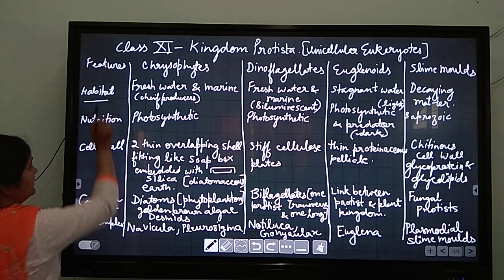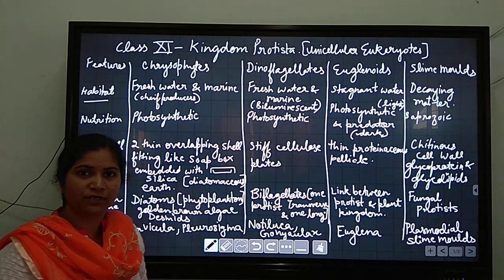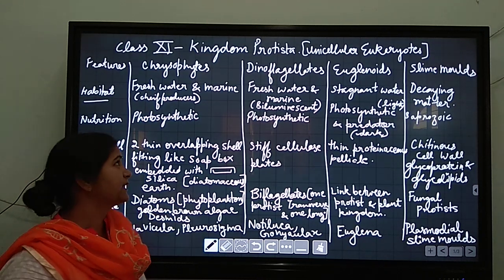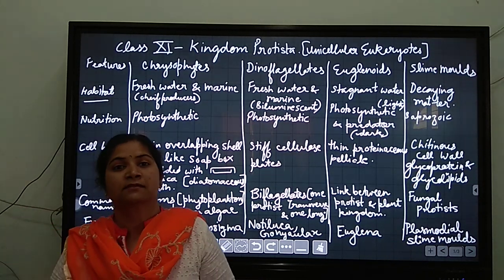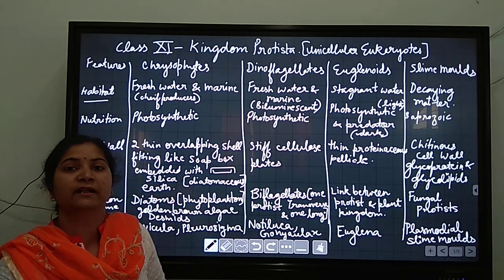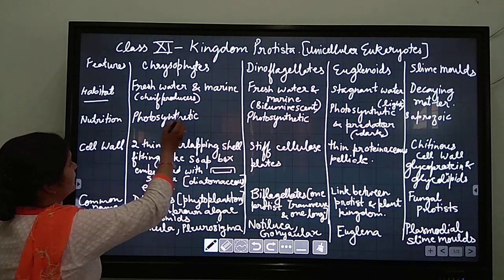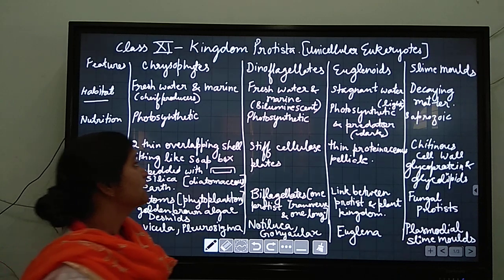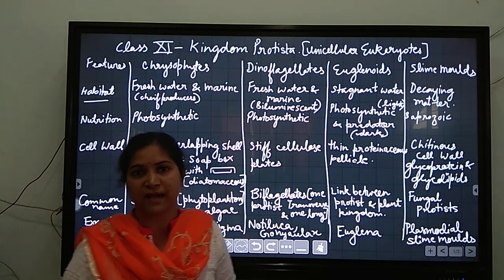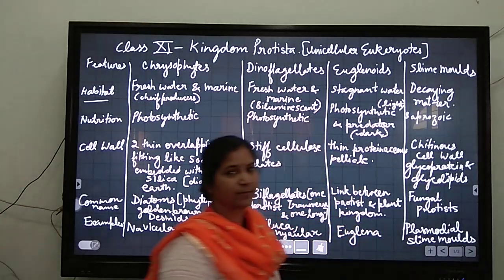The first feature is habitat - where they are found. Chrysophytes are generally found in fresh water, that can be rivers and marine water, that can be oceans and salty water. Dinoflagellates also occur in both fresh water and marine water. Euglenoids mostly occur in stagnant water and slime molds occur in dead decaying matter.